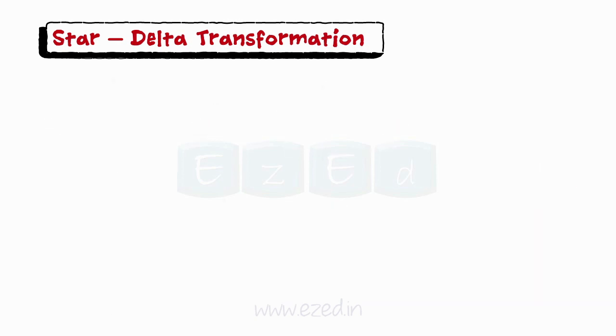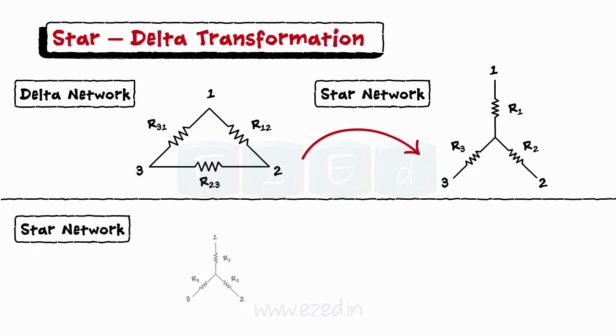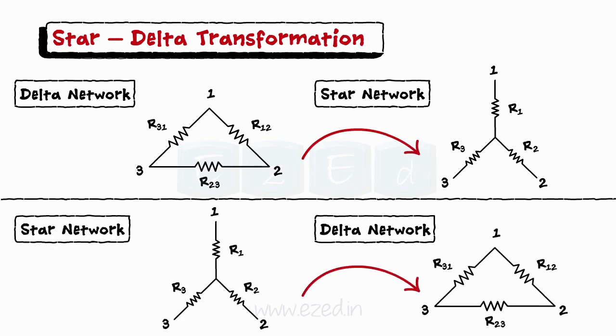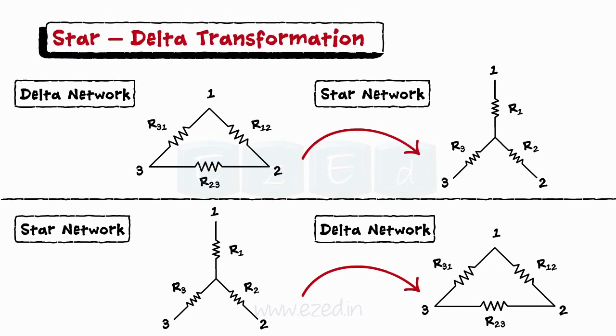In such cases, we use two conversion techniques. We either convert delta looking structure into star looking structure or star structure into delta. This is called as star-delta transformation. So let's start with delta to star conversion.